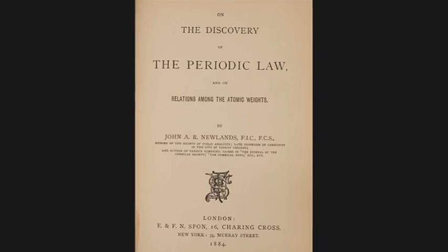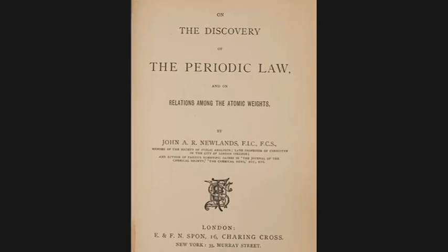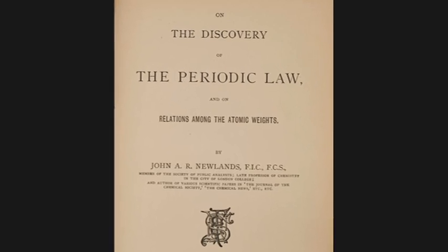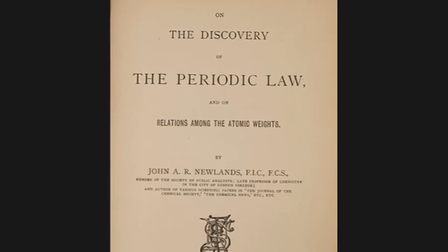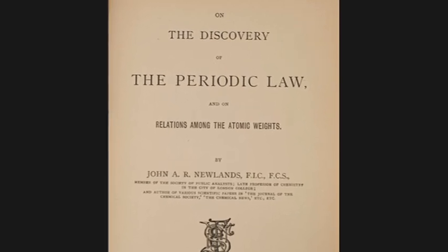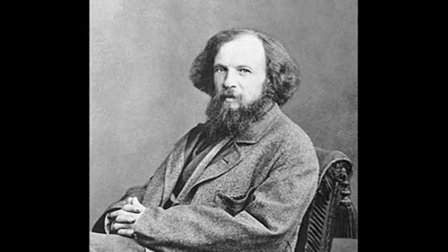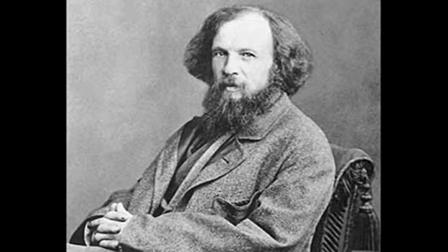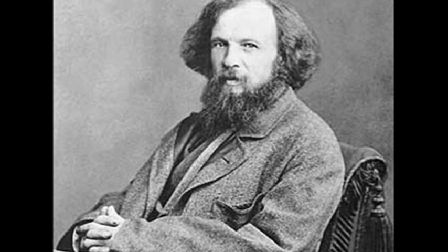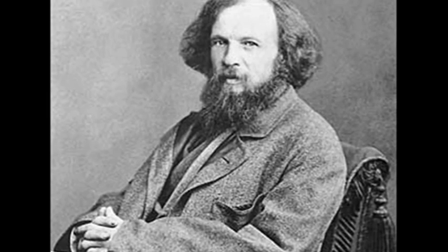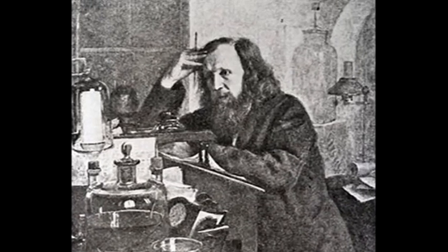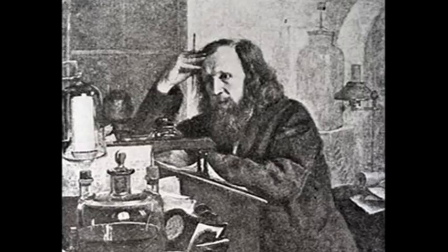However, Newlands' work was ridiculed at the time, and was only formally recognised in 1887. Mendeleev, meanwhile, was unaware of Newlands' work because the Society of Chemists had refused to publish his findings. The Russian chemist therefore continued to work on his own system.